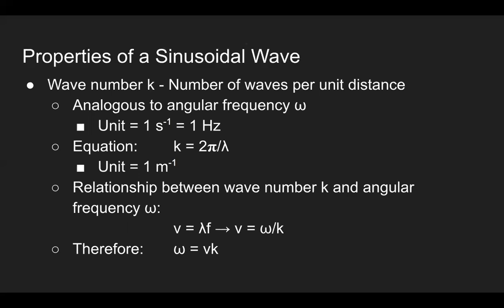Additionally, we can formulate a relationship between wave number and angular frequency. The wave number is linearly proportional to the angular frequency by the wave speed, as shown in the equation at the very bottom, ω = vk.